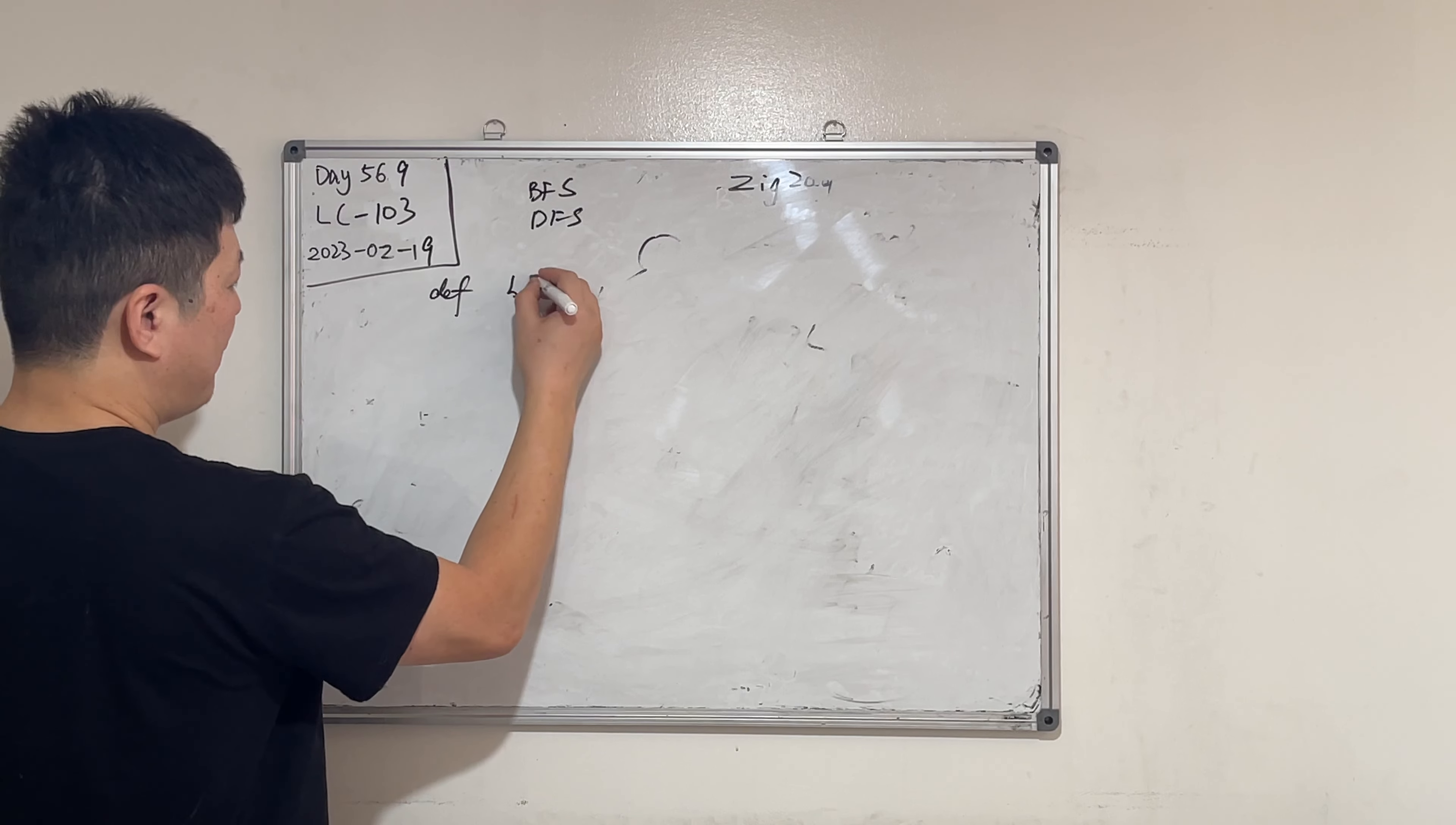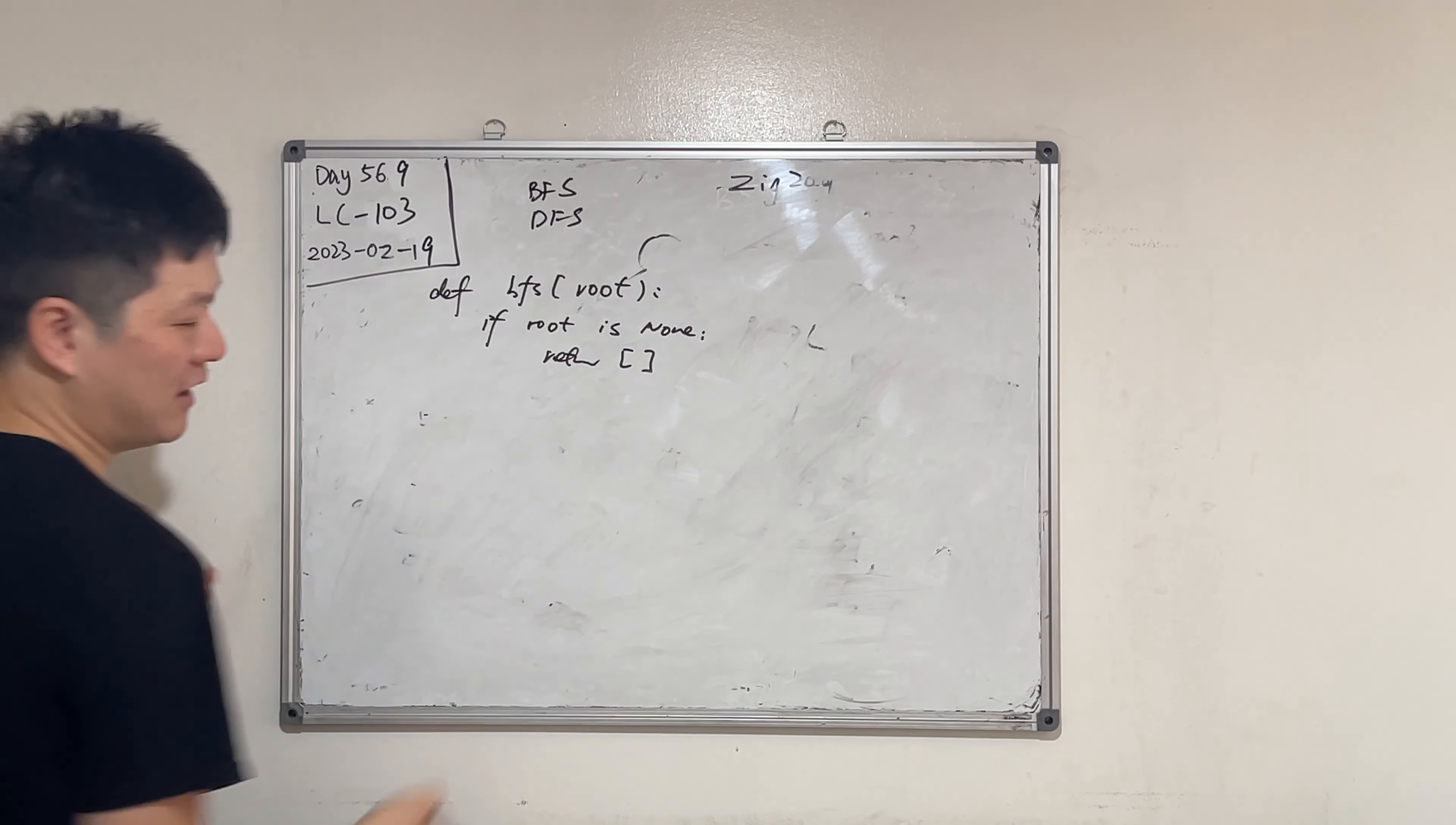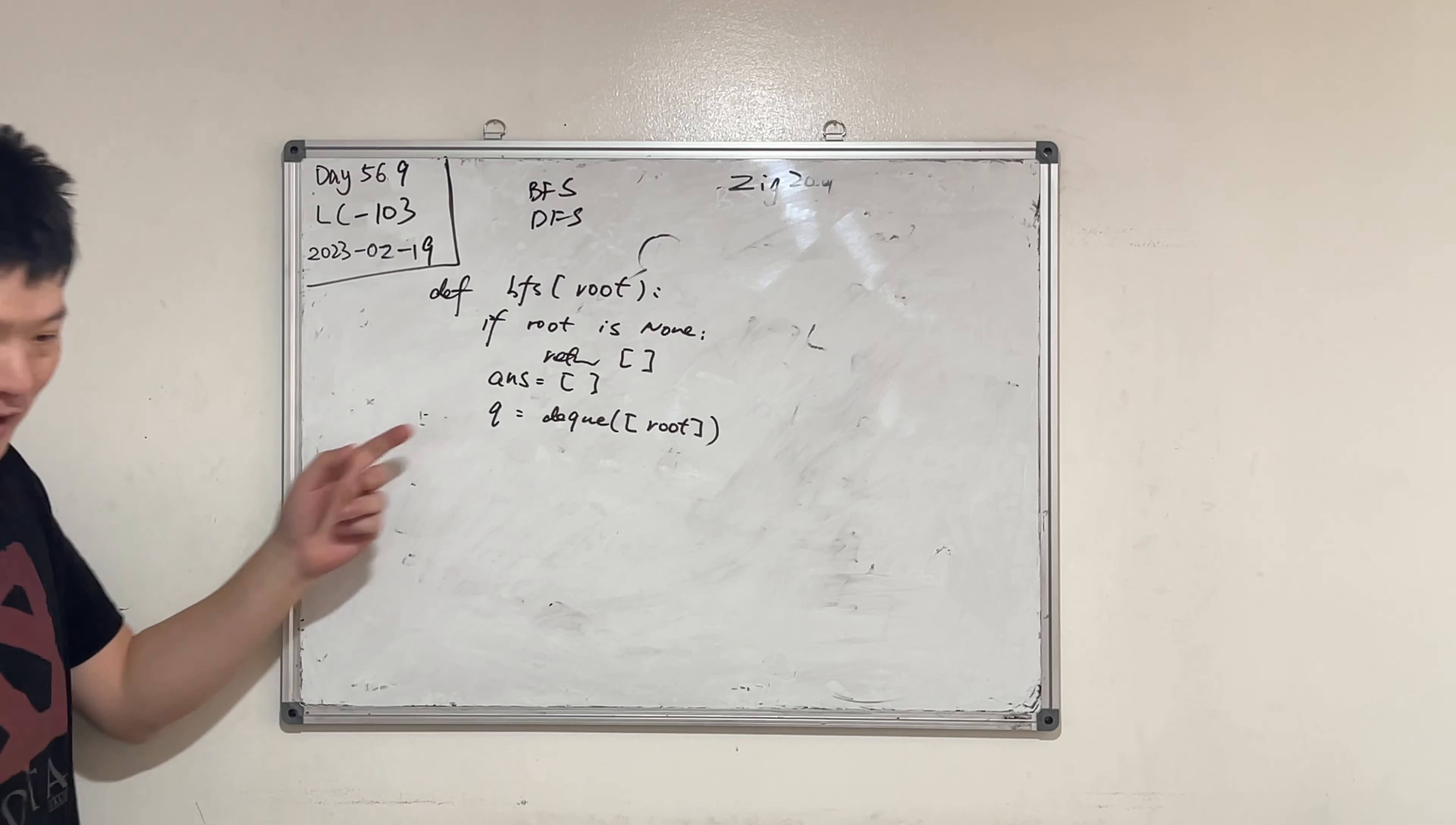Define the breadth first search. We have a root. The special case is that if the root given is empty. If not root or if root is none, we just need to return immediately, okay? Return the empty list. Answer equals this. At the beginning we use a queue equals deque. At the beginning we put a root in, right? There's only one root in.